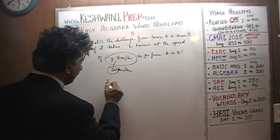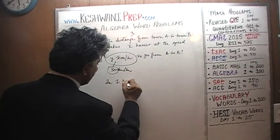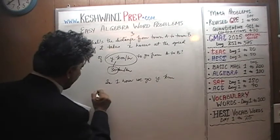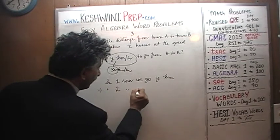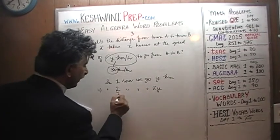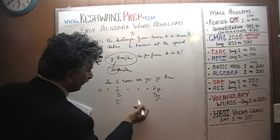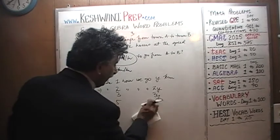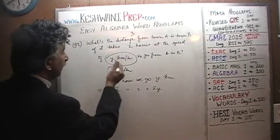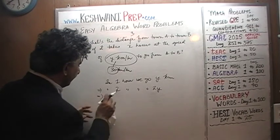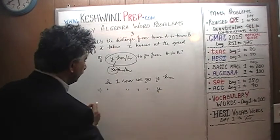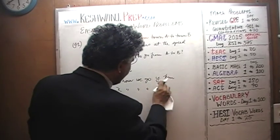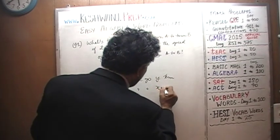We know it takes one hour to go Y kilometers, because it's Y kilometers per hour. So in one hour we go Y kilometers. That implies that in two hours we can go 2 times Y, in three hours 3 times Y, in five hours 5 times Y, and so on. We are going for X hours, so in X hours we should be able to go X times Y kilometers.